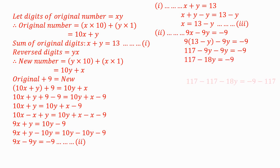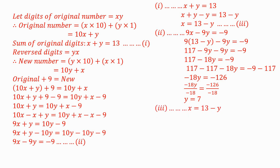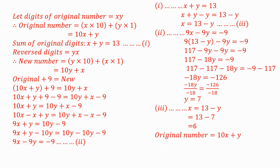From Equation 2, 9X minus 9Y equals negative 9, we substitute X with 13 minus Y and solve for Y — we obtain Y equals 7. From Equation 3, X equals 13 minus Y; substituting Y we get X equals 6. We have been asked to find the original number. The original number is 10X plus Y, so substituting X and Y: 10 times 6 plus 7 equals 67. The original number is 67.